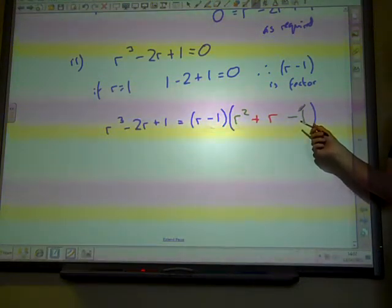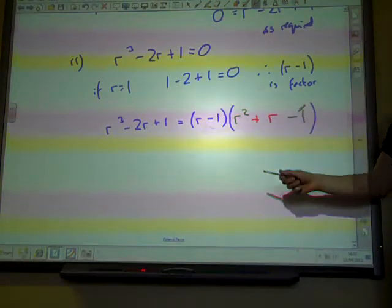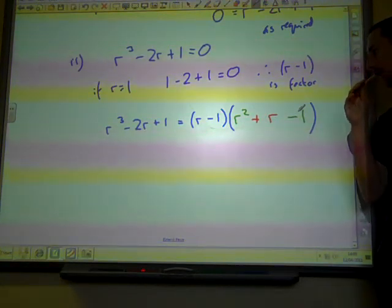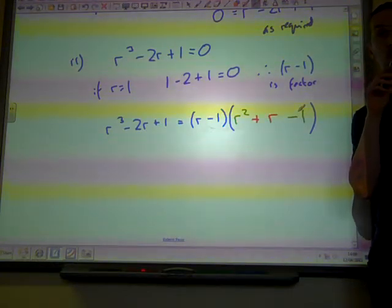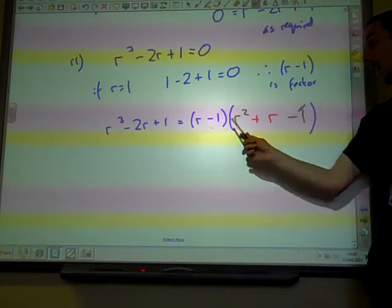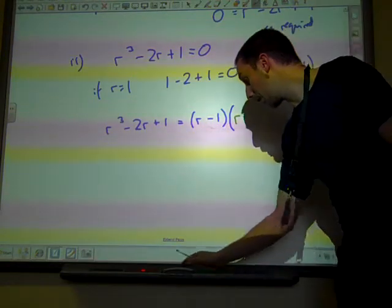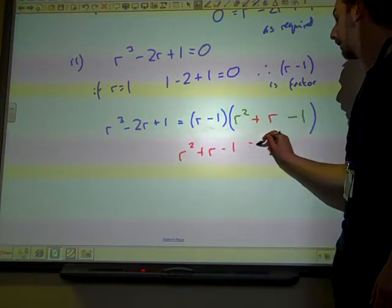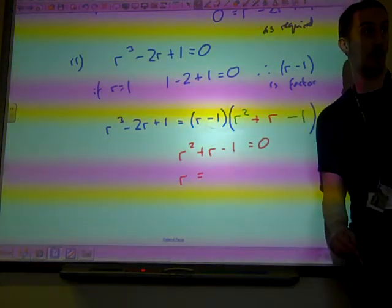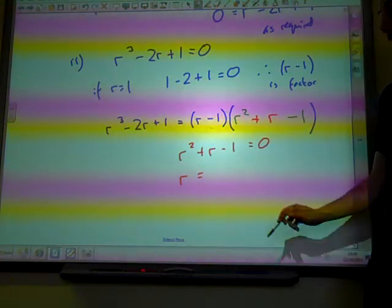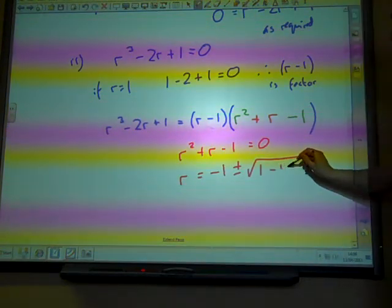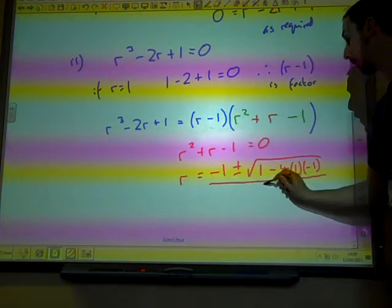Does this factorise? It doesn't. There's no things that are probably to give minus 1. So, I think we're going to have to do something with this. Something along the lines of the formula. R can't equal 1. That's no good as a solution. We need to solve this. So, we're going to try and solve where does R squared plus R minus 1 equals 0. Well, R equals, as we said this morning, the quadratic formula is something. If you don't know it already, you need to learn it quite quickly. It's minus B plus or minus the square root of B squared minus 4AC all over 2A.